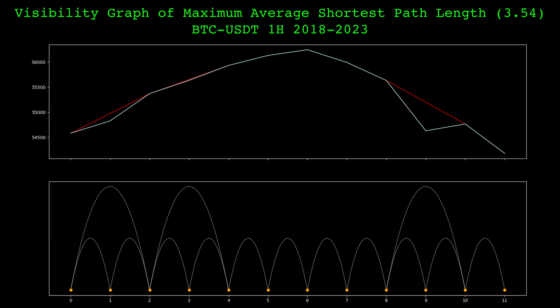Here's the visibility graph that produced the maximum average shortest path length. It is 3.54. On the graph, we can see there's very few connections. Only three connections that skip a node.